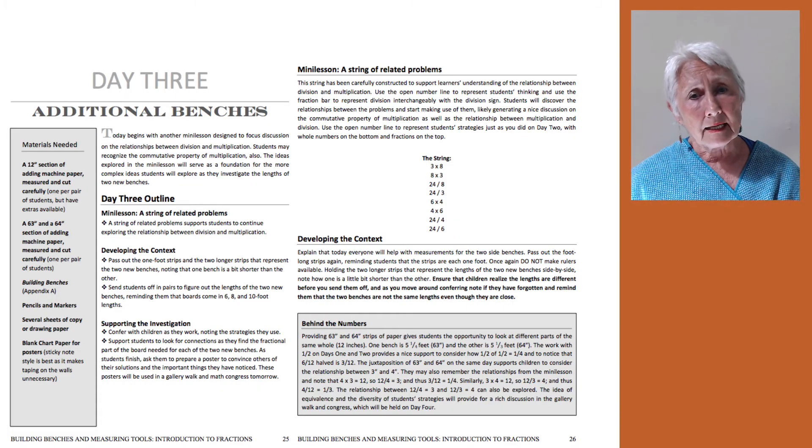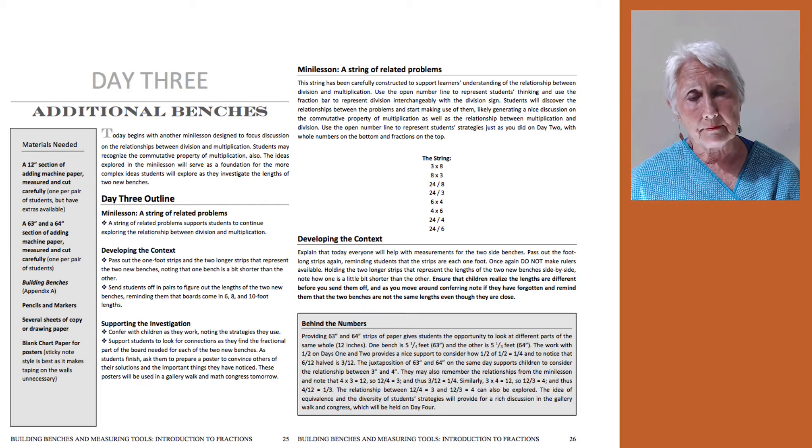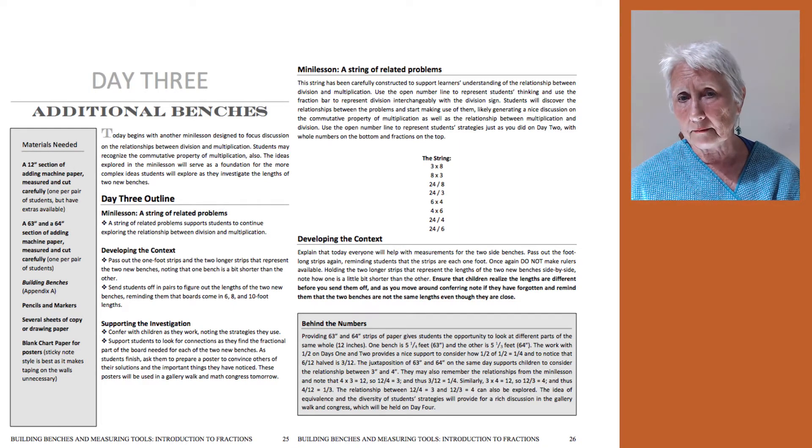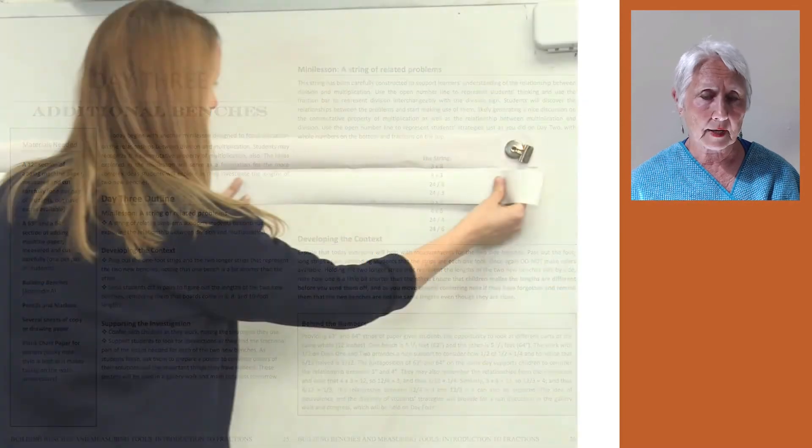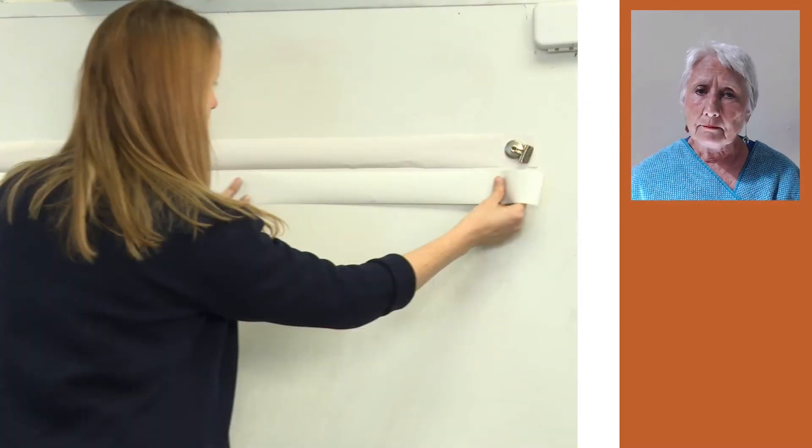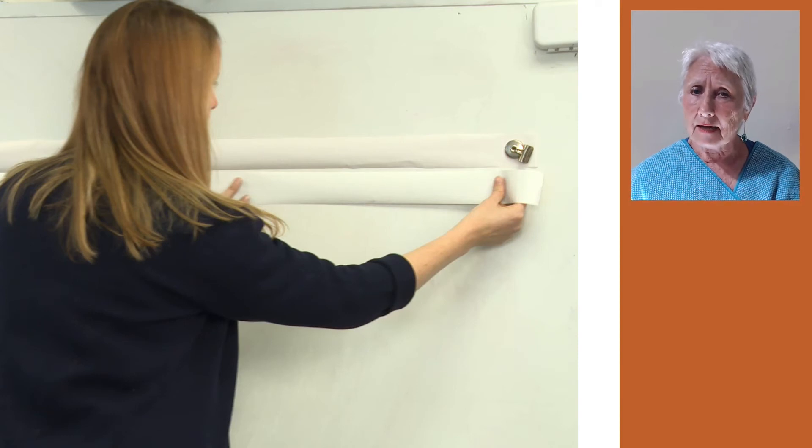On day three, the children are given strips for two more benches, the bench that will go on the left and the bench that will go on the right. One bench ends up being five and a fourth.